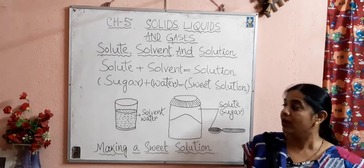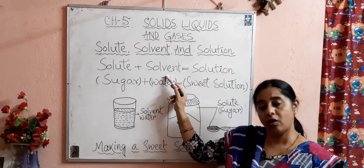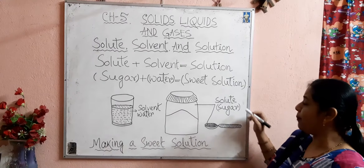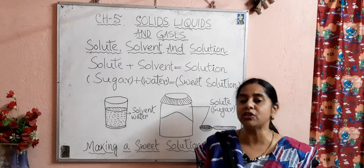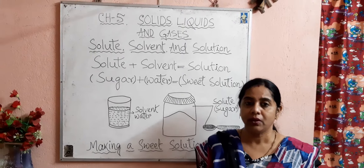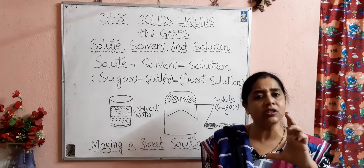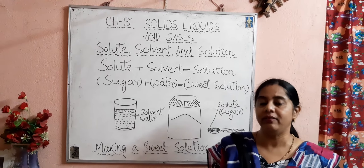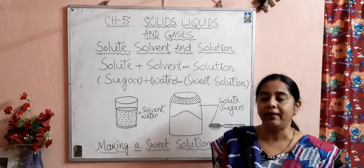If we increase the temperature of a solvent, we can dissolve more amount of solute in it. Suppose you take cold water from the refrigerator — one glass of cold water and two tablespoons of sugar — and try to dissolve it. It will take more time to dissolve the sugar in cold water.